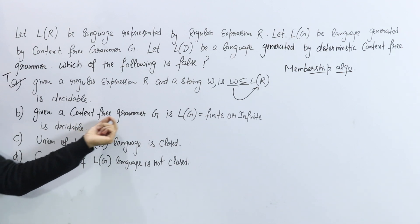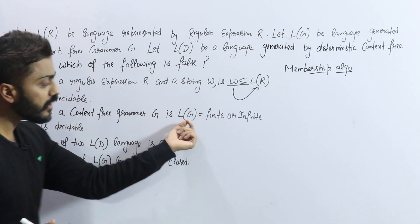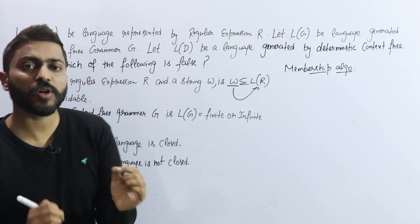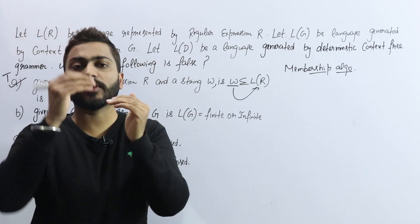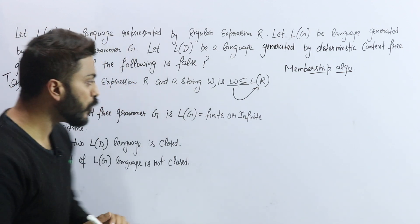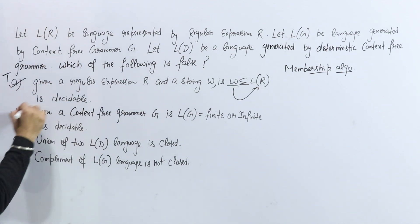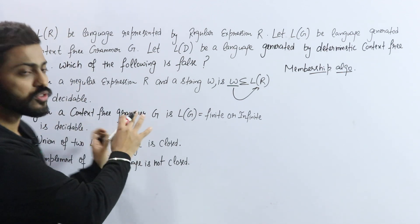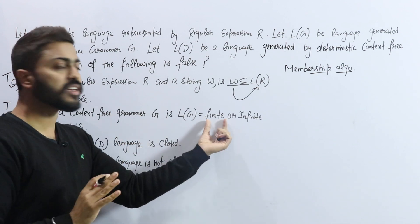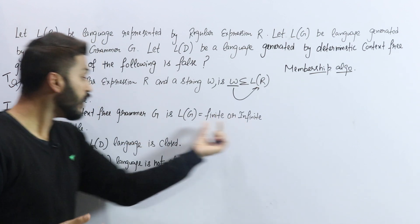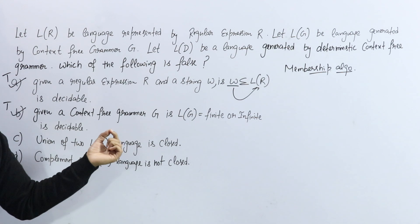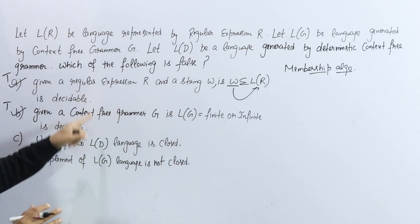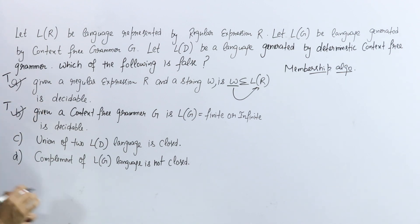Next, given a context-free grammar G, where G is finite and infinite — the second point is about finiteness and infiniteness. I will tell you that in the case of regular languages, obviously finiteness and infiniteness are decidable. Even for context-free grammar, finiteness and infiniteness are decidable. Both of these options are true.